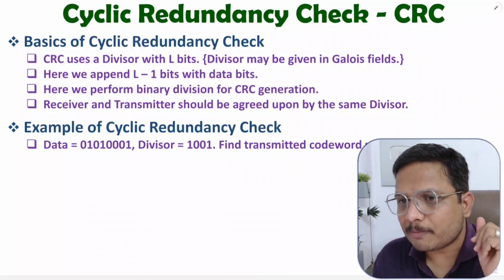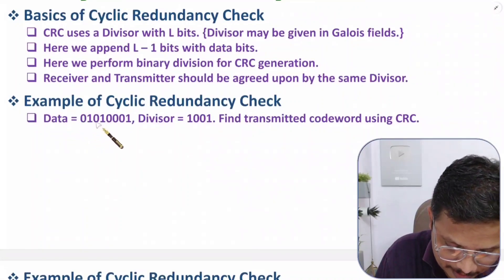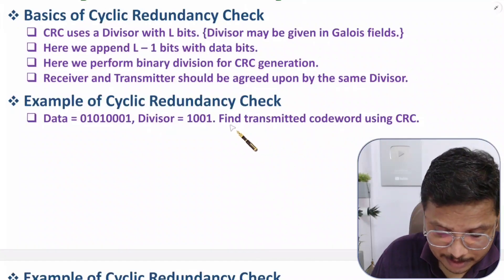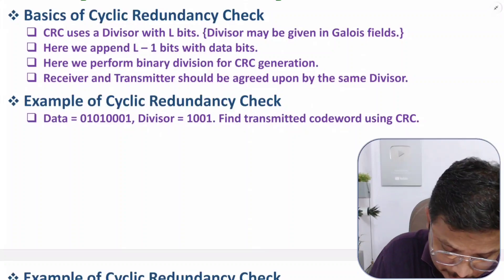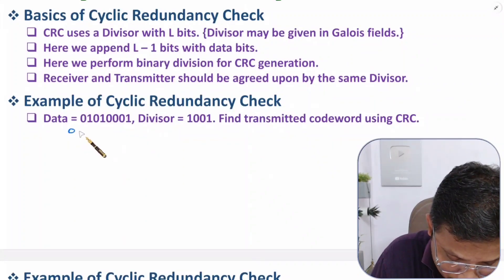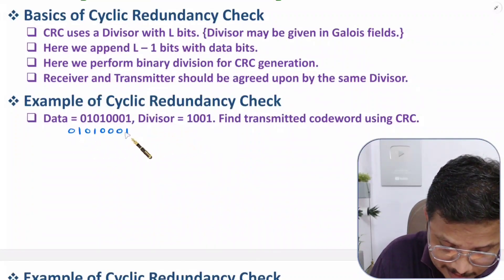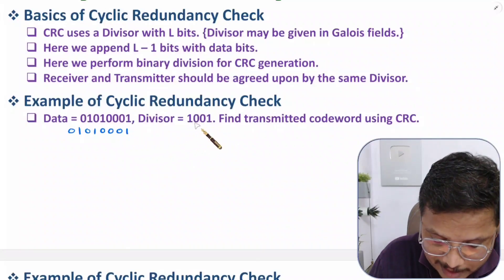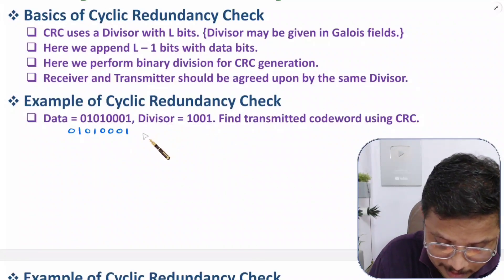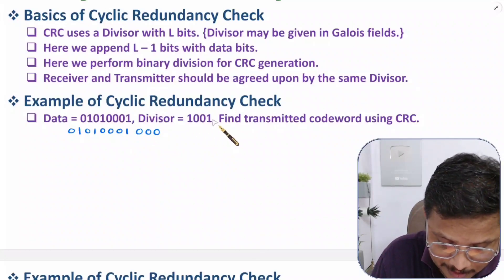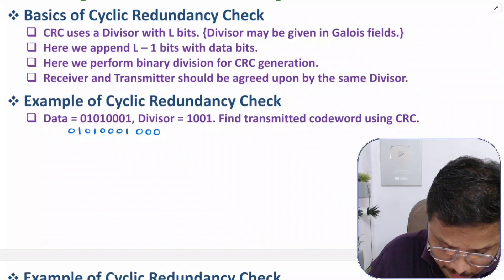Here is a practical example. Data is given and the divisor is also given; we want to find the codeword generated by the transmitter. First, write the data: 0 1 0 1 0 0 0 1. After writing the data, determine how many redundancy bits to add. Since the divisor has 4 bits, we append L minus 1, which is 3 bits — so append 0 0 0.